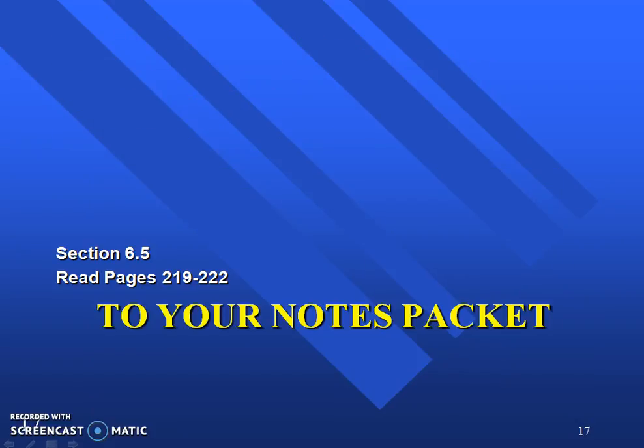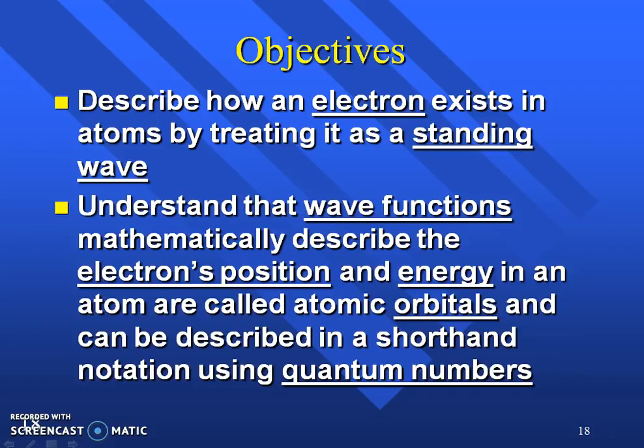Back to your chapter notes. The objectives are to describe how an electron exists in the atoms by treating them as a standing wave. We're going to look at them as wave functions and not just as a particle. Mathematically, there is a way to understand the location or position of that electron and how much energy it has and what orbital it's in. There's a shorthand called quantum numbers. You just need to understand what those four quantum numbers relate to.